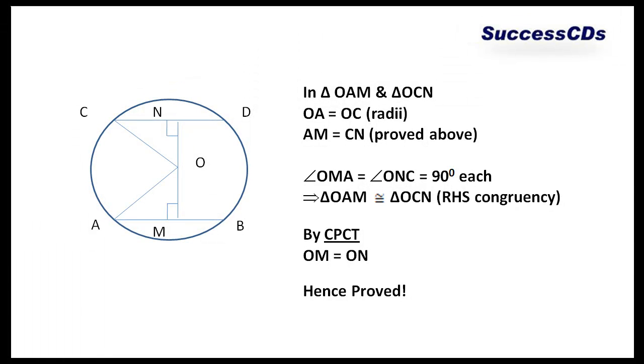We have already come to know that AM and CN are equal to each other. If we look at triangles OAM and triangle OCN, OA and OC are equal to each other, radii of the same circle. AM is equal to CN, already proved above.